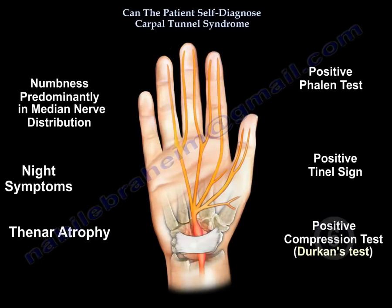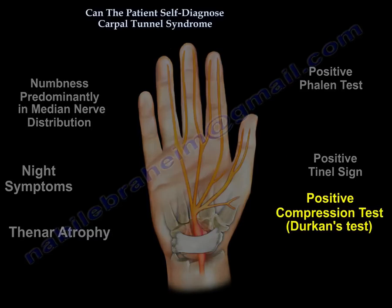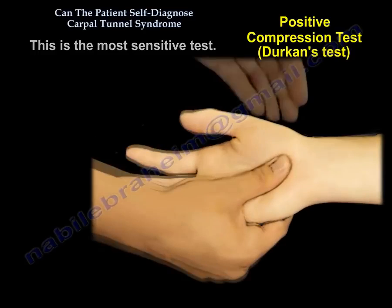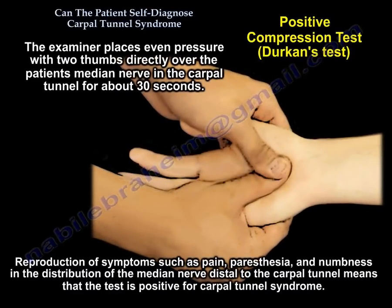The positive compression test — Durkan's test — is the most sensitive test. The examiner places even pressure with two thumbs directly over the patient's median nerve in the carpal tunnel for about 30 seconds. Reproduction of symptoms such as pain, paresthesia, and numbness in the distribution of the median nerve distal to the carpal tunnel means the test is positive for Carpal Tunnel Syndrome.